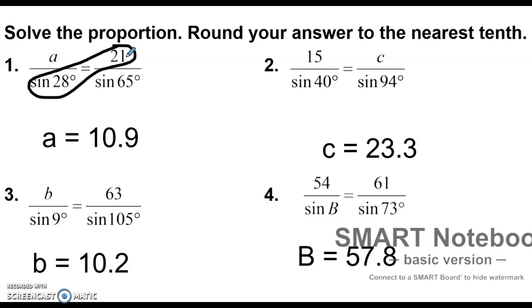Then divide that answer by the sine of 65 and find the answer. In my calculator I got 10.8780 and so on. So I'm going to round that to 10.9. We're always going to round our answers to the nearest tenth.